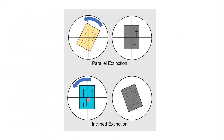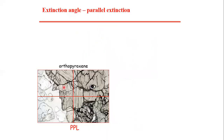You can observe that crystallographic features are parallel to the cross hair but the mineral is not in a position of extinction. When we rotate the stage it becomes dark, but in the extinction position the crystallographic features are not parallel to the cross hair. Such extinction, in which crystallographic features are not parallel to the cross hair, is termed inclined or oblique extinction.